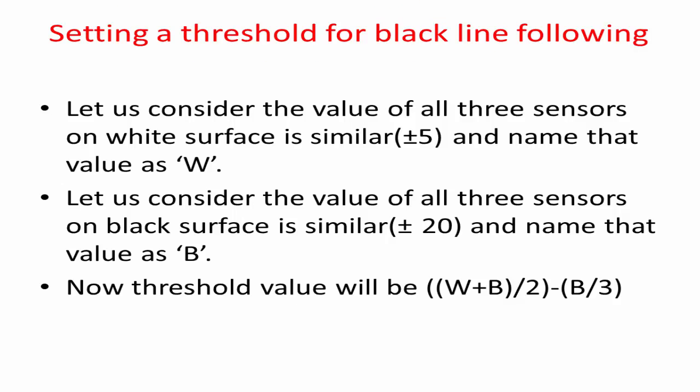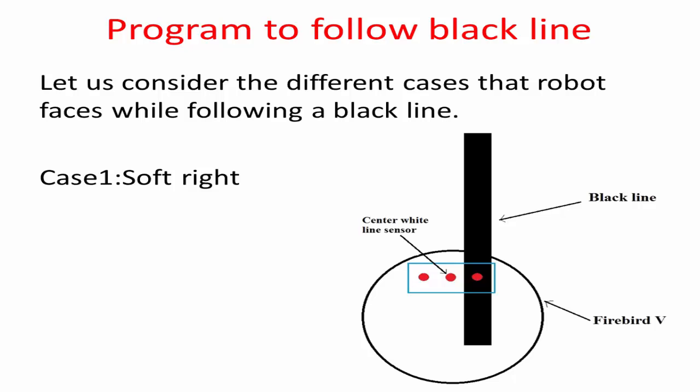Setting the threshold is an important task in line following. Consider the value of all three sensors on a white surface is similar — a difference of plus or minus 3 is acceptable; if not, adjust the potentiometer, and name that value W. Consider the value of all three sensors on the black surface is similar — a difference of plus or minus 20 is acceptable — and name that value B. The threshold value can then be calculated using the formula given here.